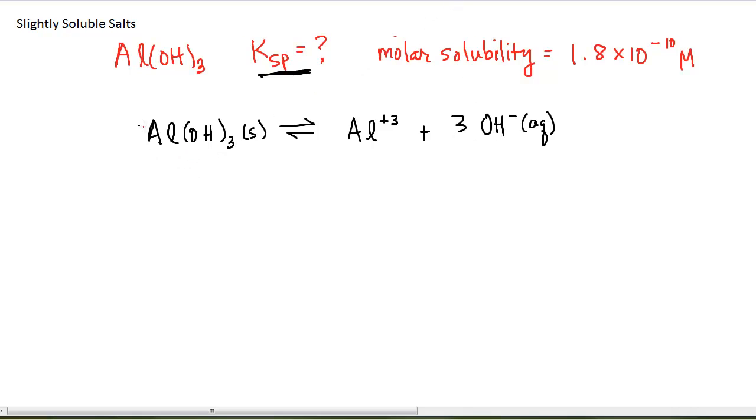And so as this dissolves, if we think about it in terms of an ICE table, some initial mass of it, some amount will dissolve. Let's call it X. That is our molar solubility, which means we get X aluminum ions and 3X hydroxide ions because of the stoichiometry. Again, a lot of people just skip the whole ICE table because it's pretty straightforward, but I find it useful to draw it.